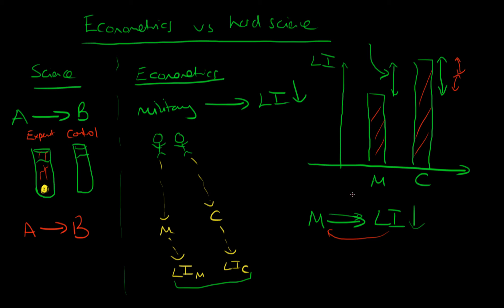The observed difference in lifetime income is composed of two effects. The one we're interested in is the causal effect of military participation on lifetime income. There's also a reverse causation effect: individuals with lower lifetime income potential might sign up for the military in the first place. Given only the historical data we have, it is impossible to determine which of these two effects is dominating — which is causing average lifetime income of military personnel to be lower than that of civilians.